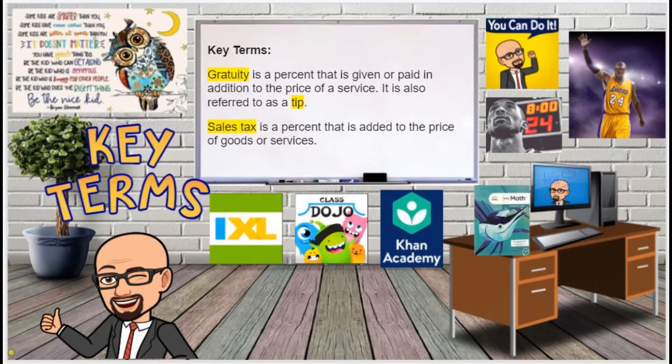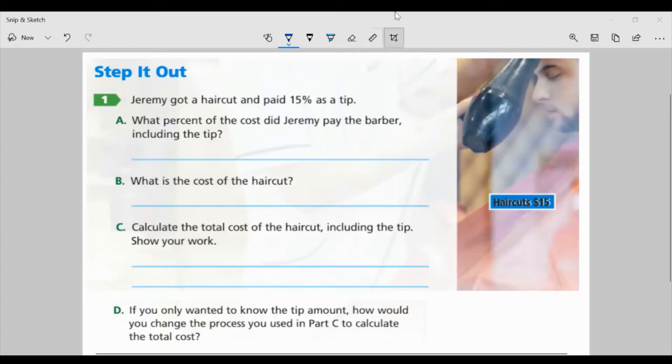Before we get to the task, let's look at some of the new key terms for this lesson. Gratuity is a percent that is given or paid in addition to the price of a service. It is also referred to as a tip. Sales tax is a percent that is added to the price of goods or services. Let's go ahead and look at task 1 on page 71.